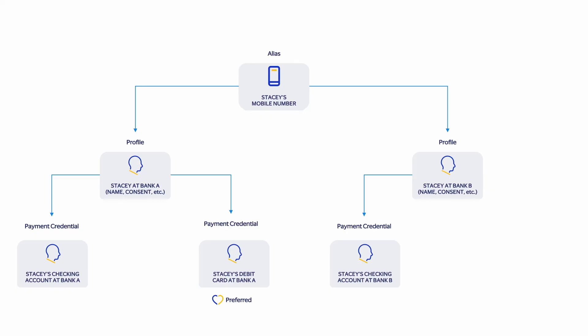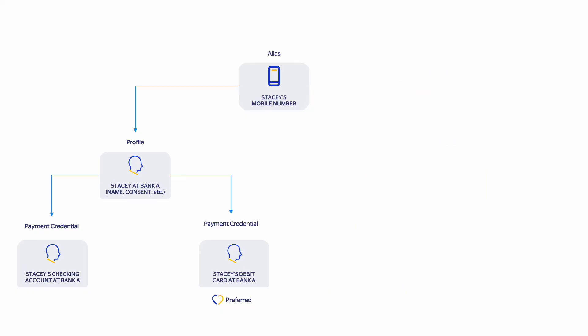However, if Stacey decides to discontinue the service and remove her alias profile entirely from the financial institution, they will need to use the delete alias API. For example, Stacey might decide to remove her alias profile from bank B. But remember, this won't delete Stacey's alias from bank A, as the same alias is also registered there.